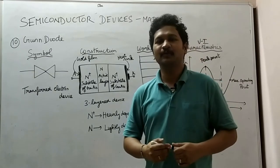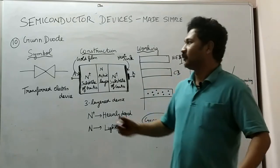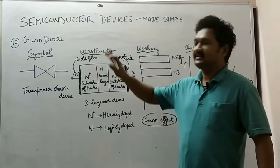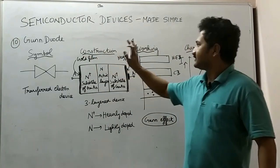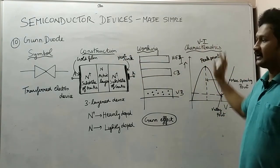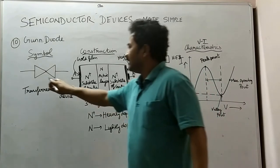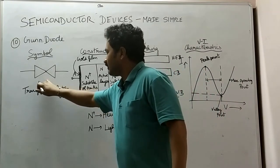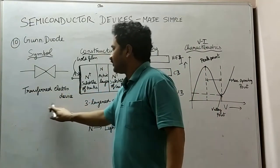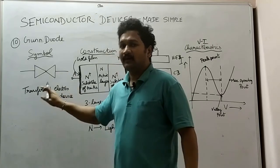Hello everyone, welcome to my channel. In this lecture I'm going to discuss in detail about the construction, working, and characteristics of a Gunn diode. Let's start from the symbol. This is the symbol for the Gunn diode. The Gunn diode can also be called a transferred electron device — I'll explain why it is called that.